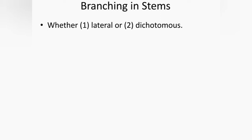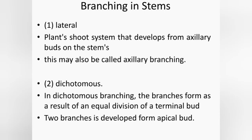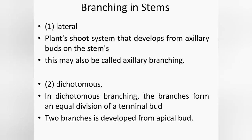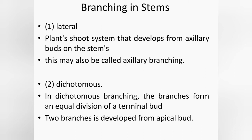Next, branching in stems. With the growth of the stem, it divides into two different branch types: lateral and dichotomous. Lateral branches are the shoot system of plants that develops from axillary buds on the stems; this may also be called axillary branching. In dichotomous branching, branches form as a result of an equal division of a terminal bud, meaning two branches develop from the apical bud.